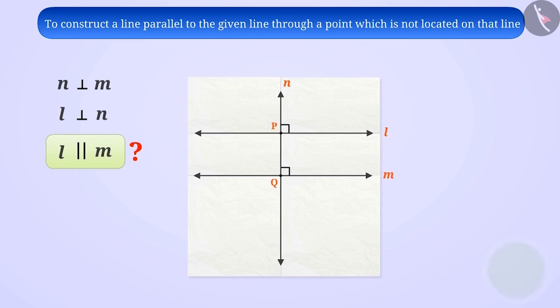You are absolutely right. Since both lines are perpendicular to the same line, it means their corresponding angles, angle Q and angle P, are equal in measure, that is 90 degrees. Since the corresponding angles are equal, we can say that the lines L and M are parallel.